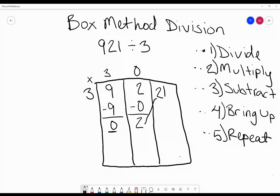So now we divide 21 divided by 3 which gives us 7. We multiply 7 times 3 which gives us 21.